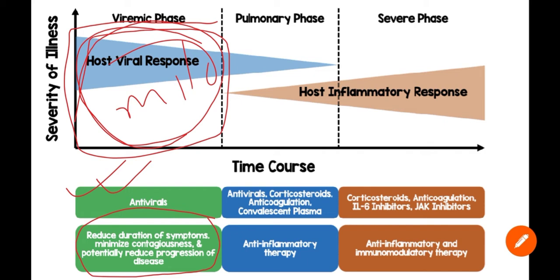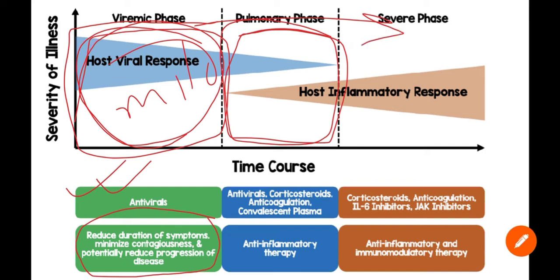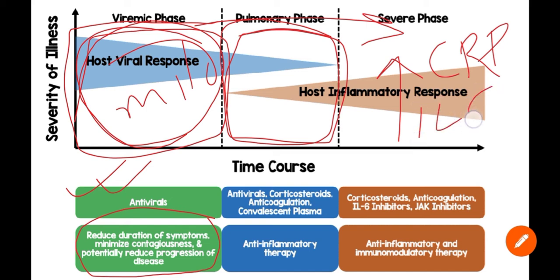But when the patient enters the pulmonary phase — that is, when the patient condition is worsening or going towards the severe phase — not only the viral host response is predominant, but gradually the host inflammatory response is also increasing. In cases of a severe host response, this is called a cytokine storm, and inflammatory markers in the body increase. These inflammatory markers include CRP, serum ferritin, and IL-6.